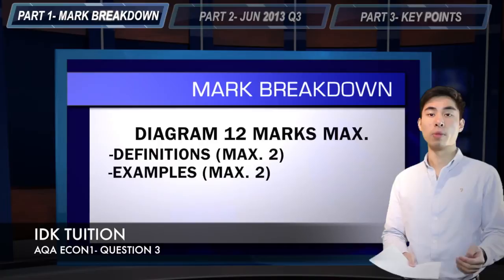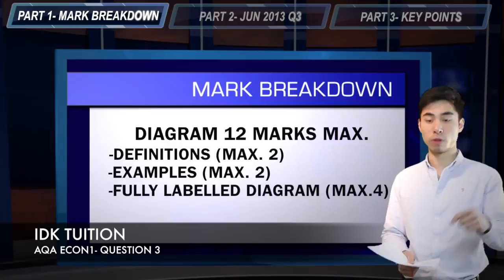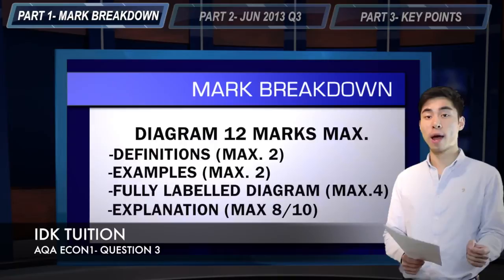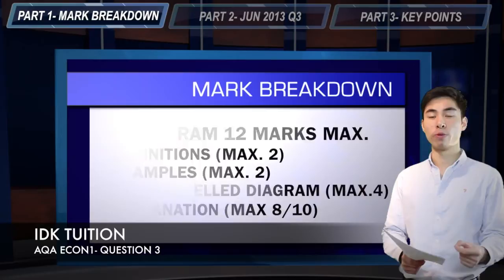There's going to be four marks for including a fully labelled diagram, and we'll see exactly what that means just after the jump. And then lastly, your written explanation — so describing what's happening in the diagram — there's going to be a maximum of either eight or ten marks available for this, depending on the question.